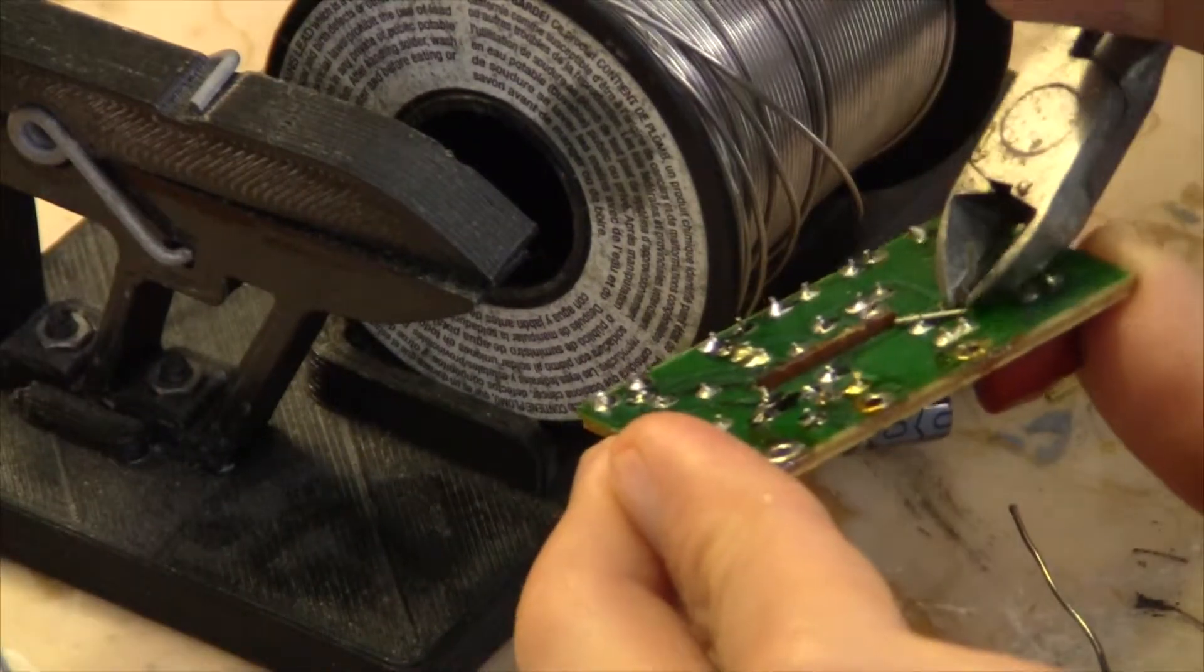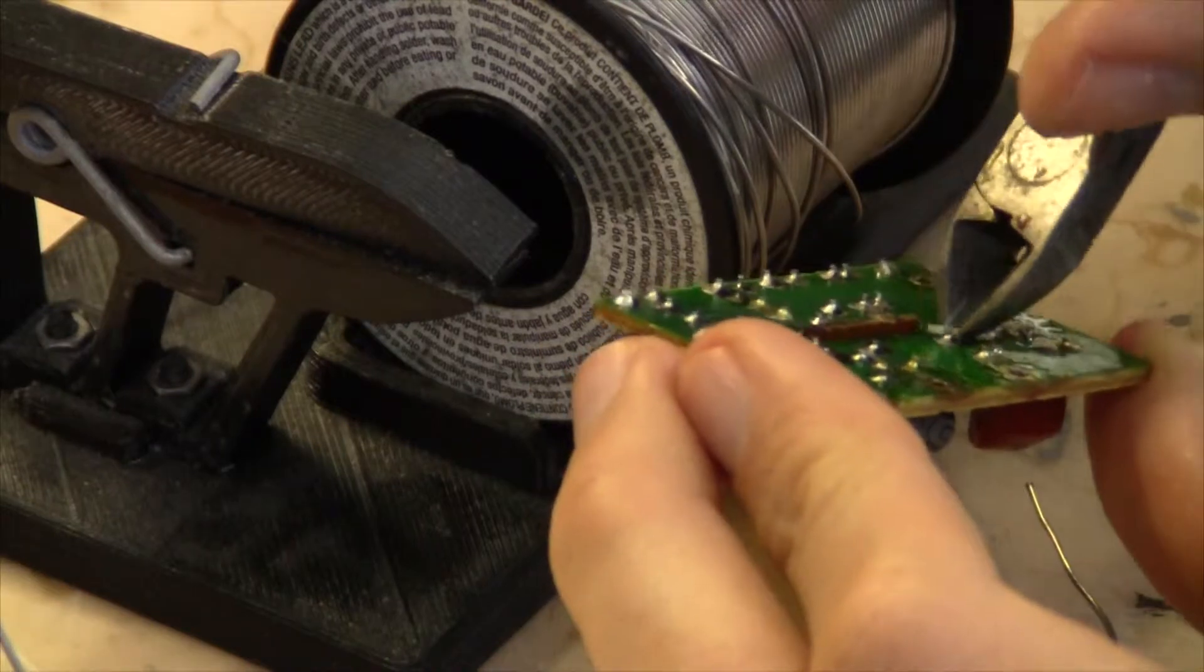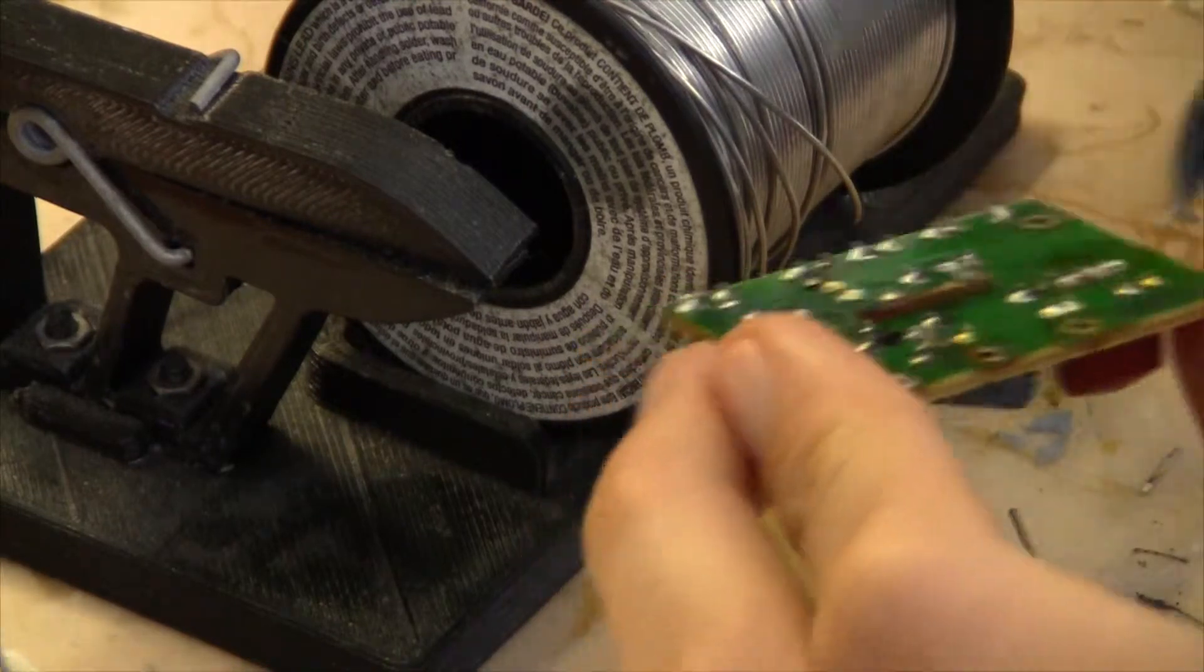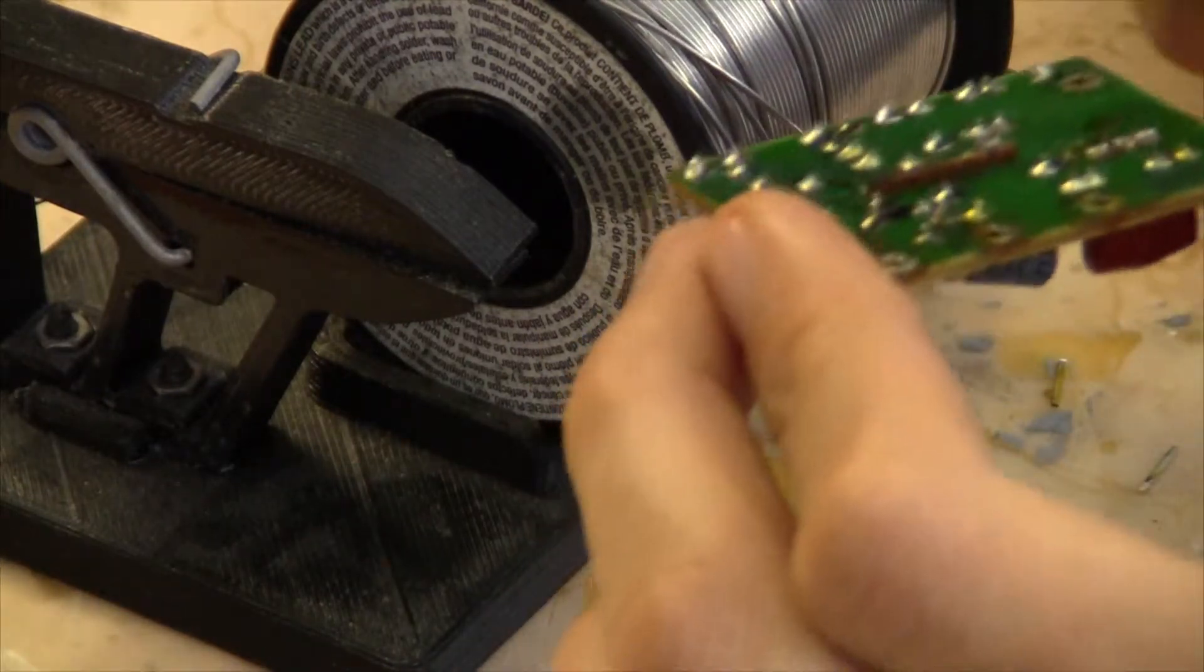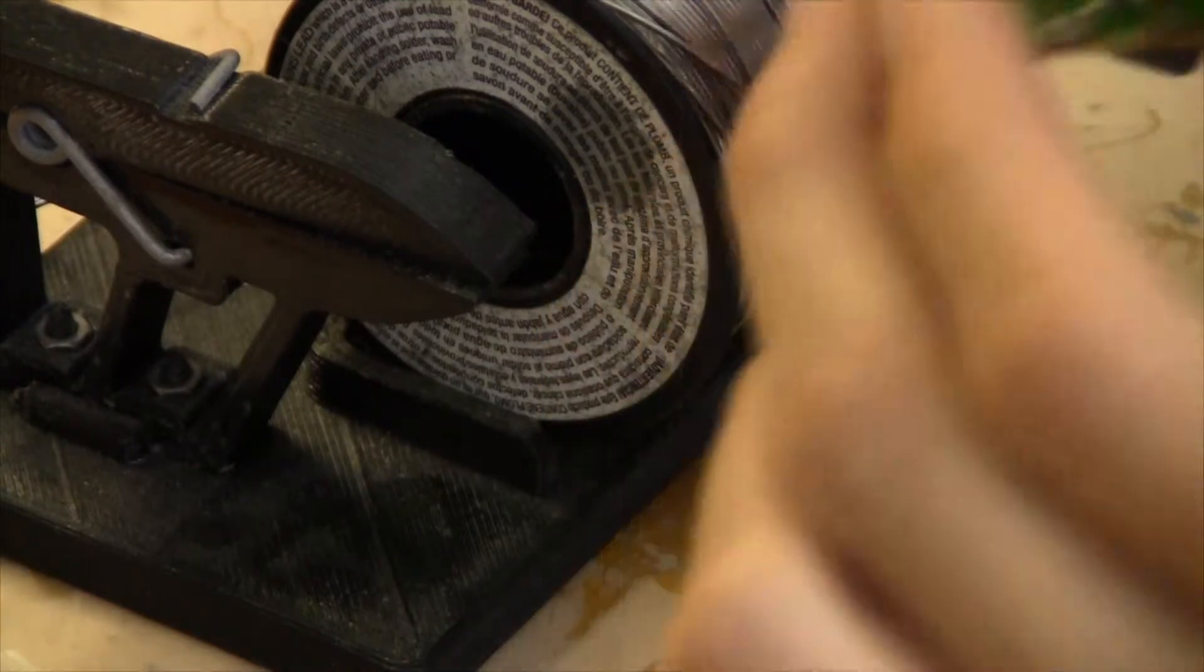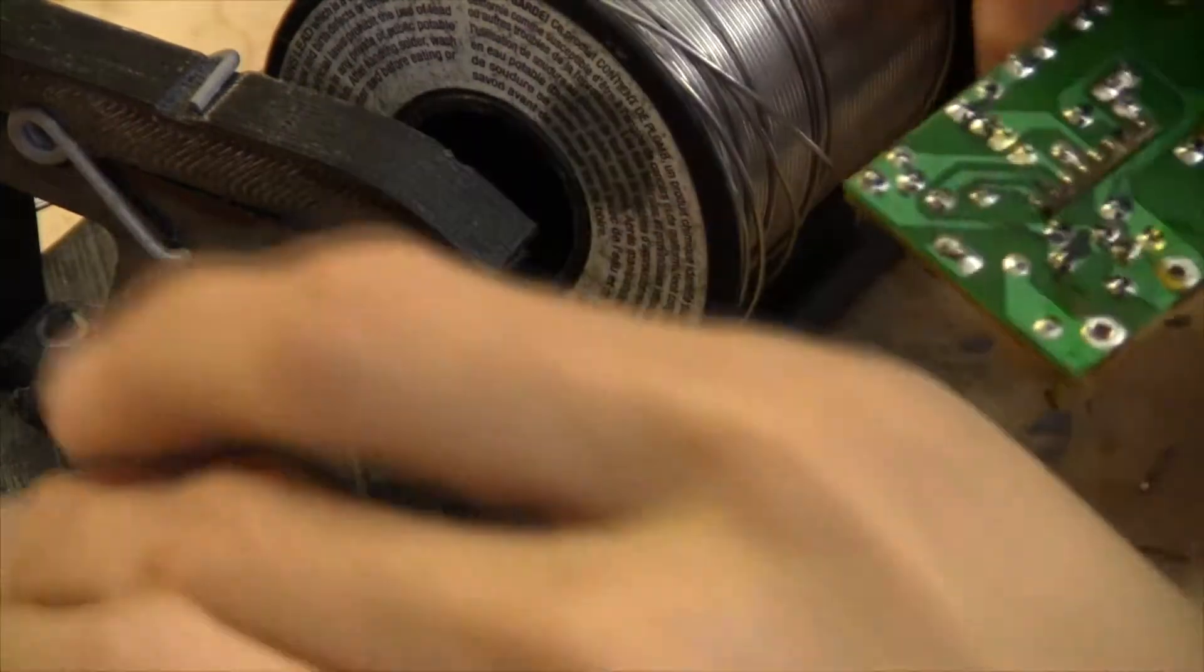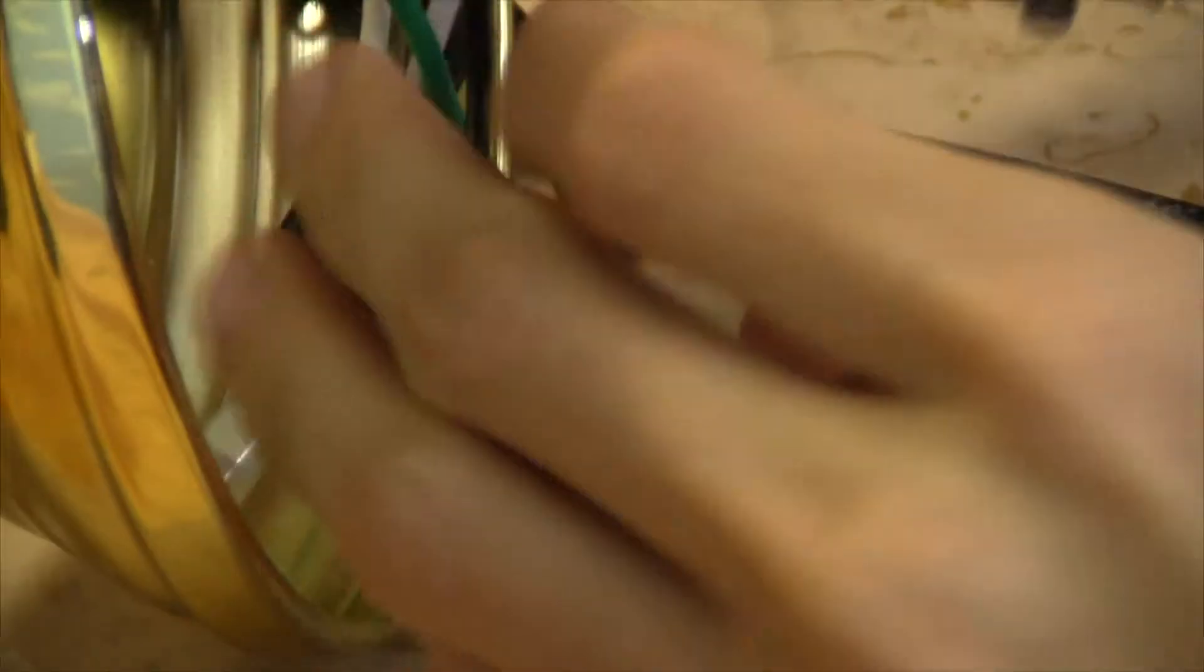This board is just covered in flux by now. Really gross. But I'm going to remove it pretty soon. And that's that for the triac. So now all I got left is to solder in those four wires and then I'm going to try to turn on the lamp to see if it'll work.